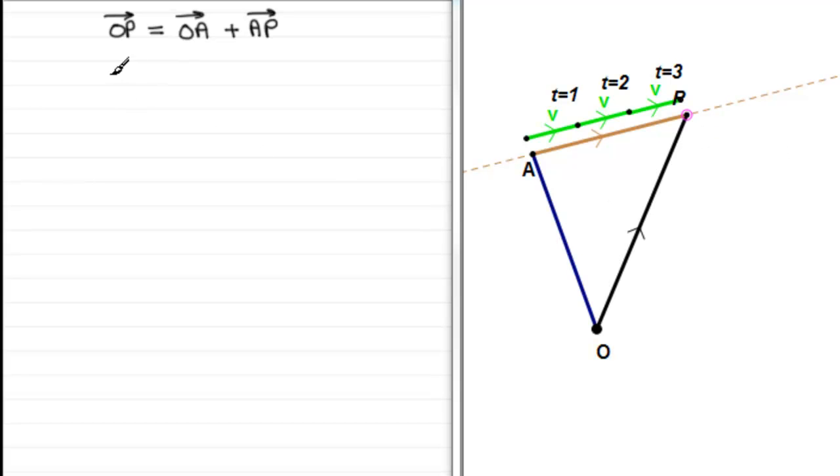So what I'm trying to say is that therefore OP is going to equal OA followed by any amount of V. So in other words, we're going to go along t times that amount of V.